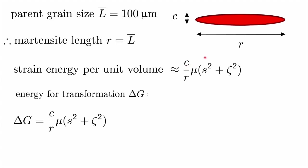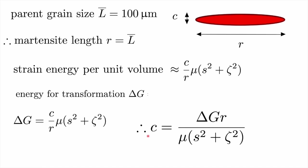Since plates cannot grow across grain boundaries, we take the length of the plate to be equal to the grain size of the parent structure — 100 micrometres. We can use our equation to calculate the strain energy per unit volume if we know the thickness. There's a certain free energy change accompanying the transformation — a reduction in free energy — and we balance the magnitude of that reduction against the strain energy per unit volume. From that, we can isolate the thickness as: t = ΔG · L / (G_shear · (strains)²). So if we know the value of ΔG, we can calculate the thickness of the plate.